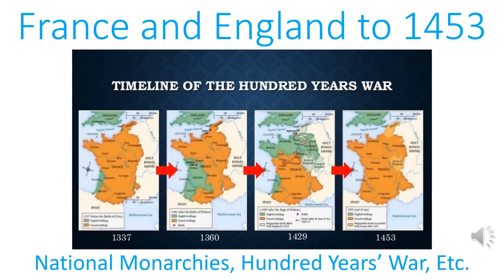To keep things connected, the Hundred Years' War is vital to the formation of the national monarchy because it is really during that war when the identities of the French and the English as two opposed, incompatible things really emerged. So without any further yammering, let's get this started.